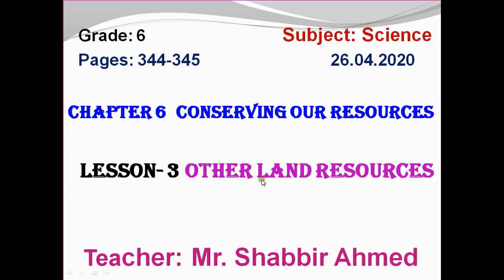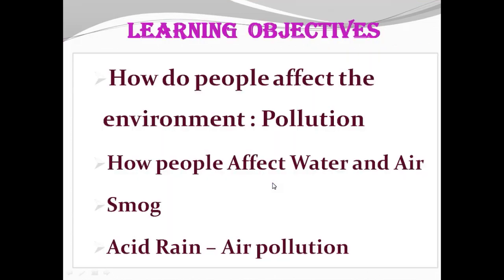In this lesson we are going to see some learning objectives. The learning objectives for today's lesson are: how do people affect the environment, how does pollution occur, and how people affect water and air — where we are going to see about smoke and acid rain, particularly about air pollution.